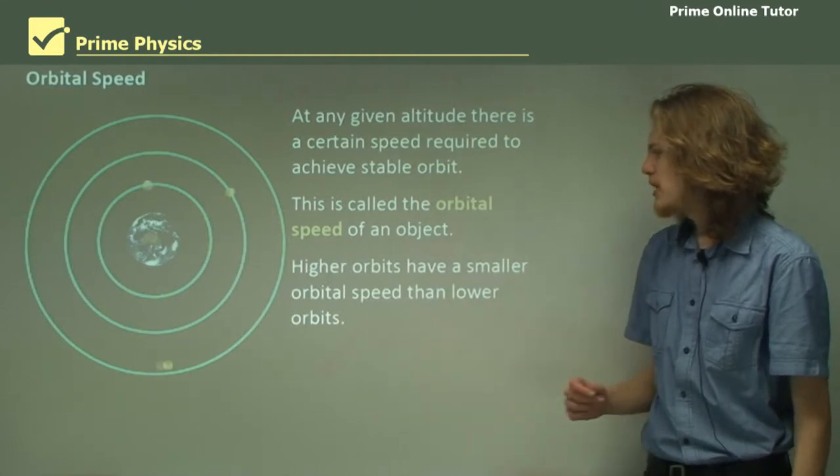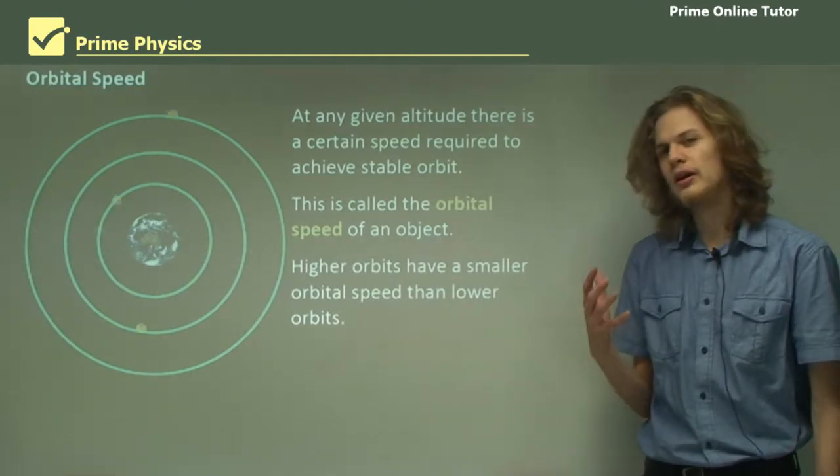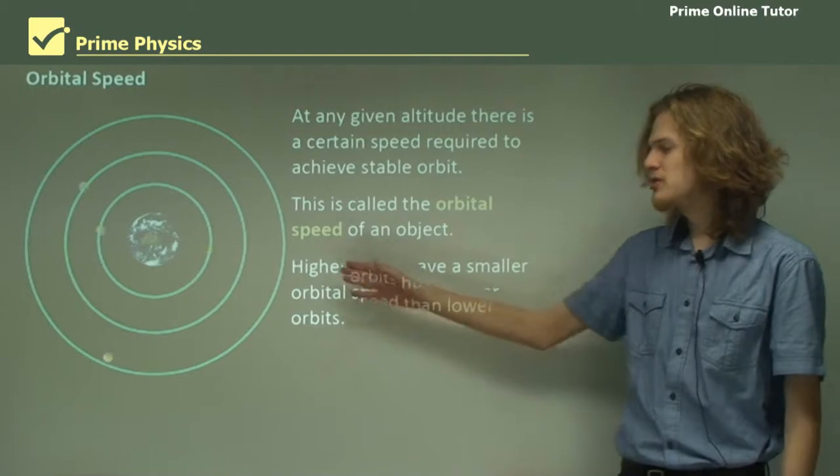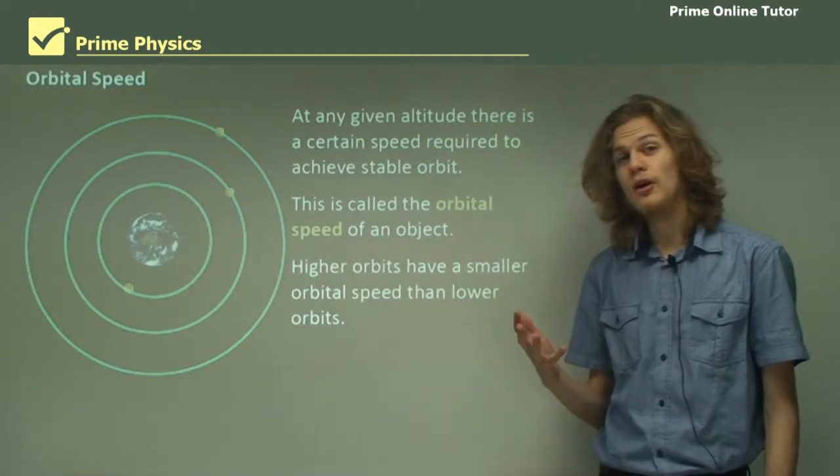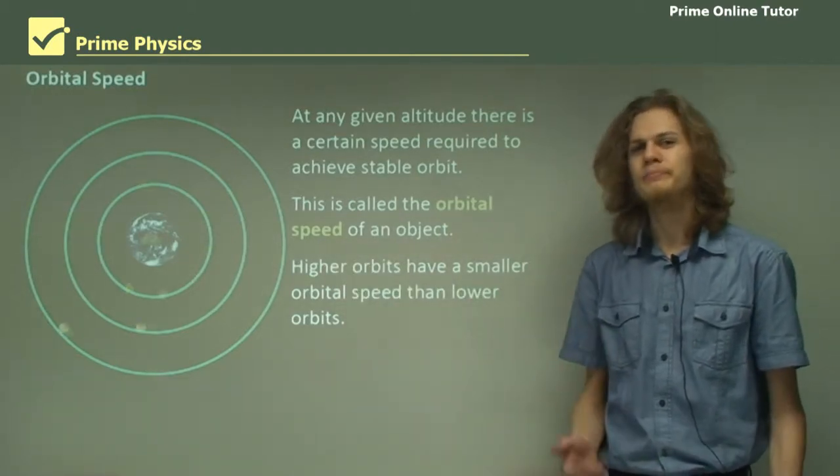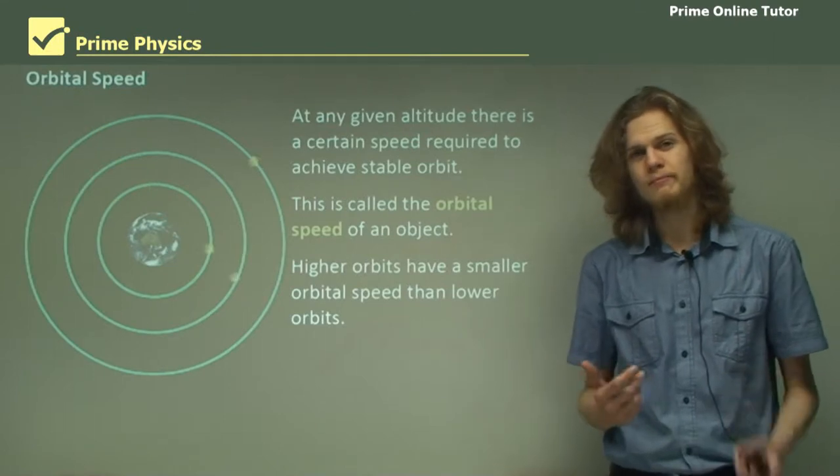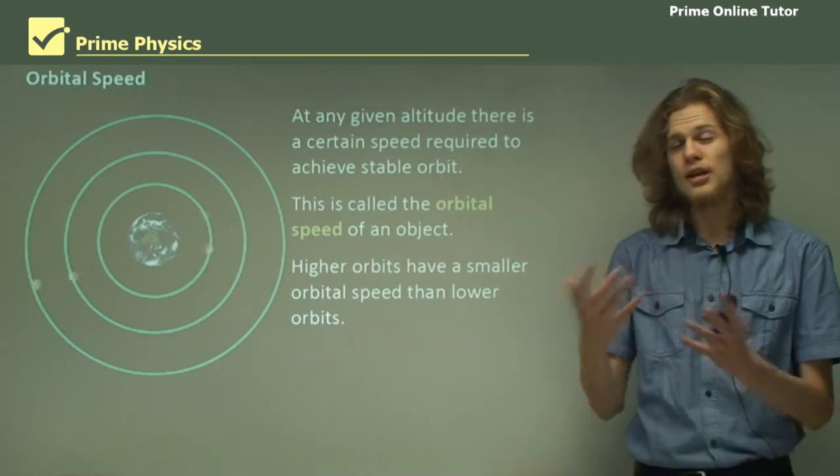Now higher orbits have a smaller orbital speed than lower orbits which we can see over here. That can be derived simply by looking at the equation for centripetal acceleration and gravitational acceleration.